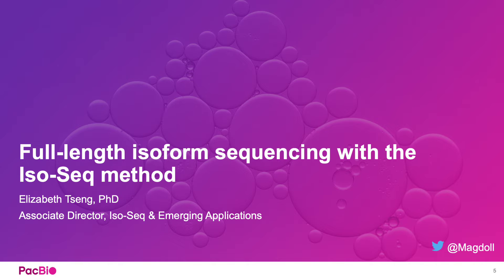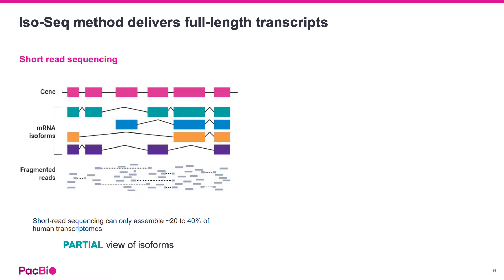Hi, my name is Elizabeth, and I'm an Associate Director at PacBio. Today I'm going to talk to you about full-length isoform sequencing with the ISO-SEQ method. Traditional RNA-seq is done by fragmenting cDNA, sequencing it with short reads, then assembling it computationally.